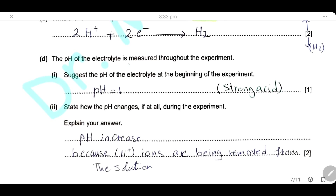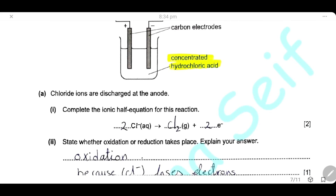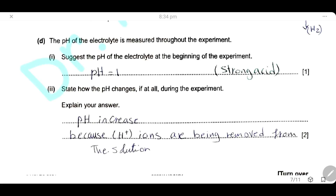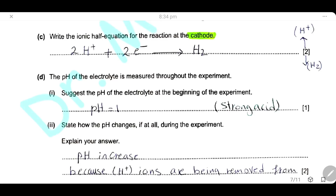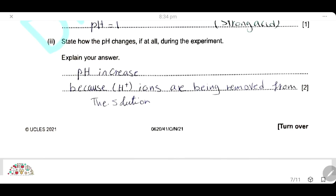The pH of the electrolyte is measured during the experiment. At the beginning, the solution is concentrated hydrochloric acid — a very strong, concentrated acid — so the pH will be 1. During the experiment, protons are discharged at the cathode as hydrogen gas, so removing protons from the solution makes it less acidic and the pH increases. Hydrogen ions are being removed from solution, so pH increases.